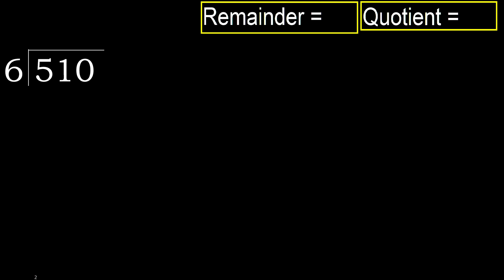510 divided by 6. 5 is less than 6, therefore move to the next digit. 51 is not less, therefore we work with 51. 6 multiplied by which number is nearest to 51 but not greater?